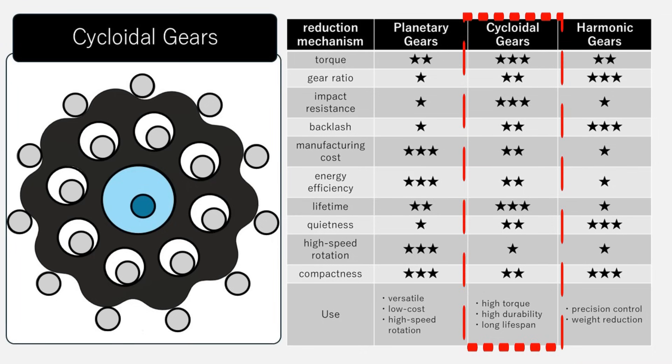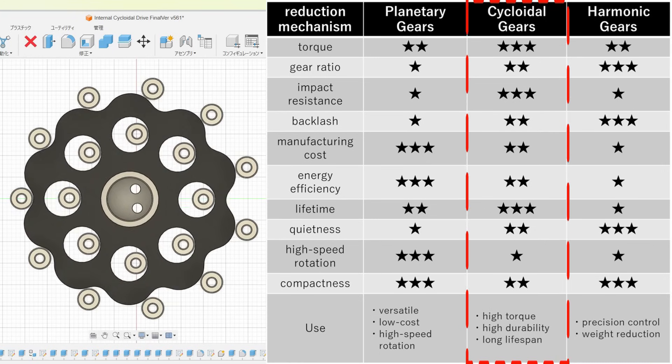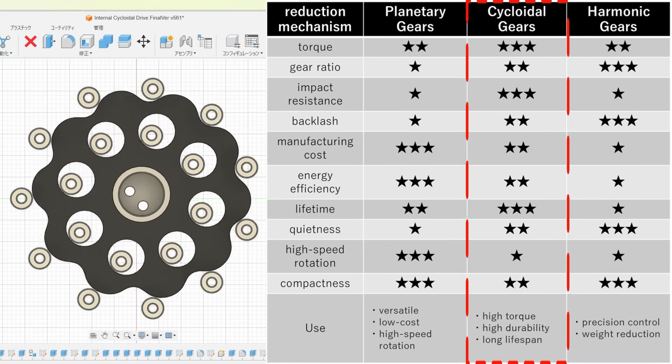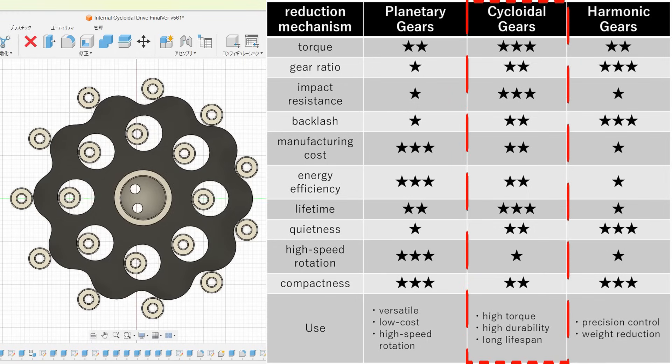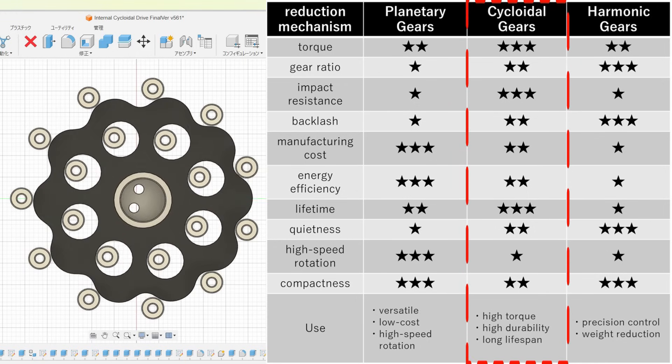Cycloidal gears: their standout feature is their robustness. The load is distributed across multiple rolling contact points, allowing for extremely high torque, strong impact resistance, and long service life. They also have high rigidity, making them more resistant to deformation, perfect for harsh environments.